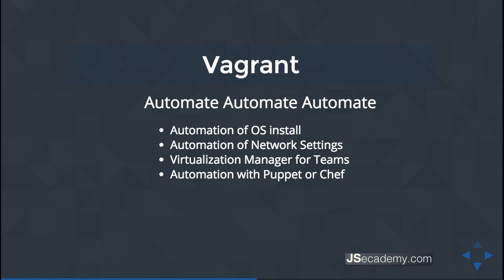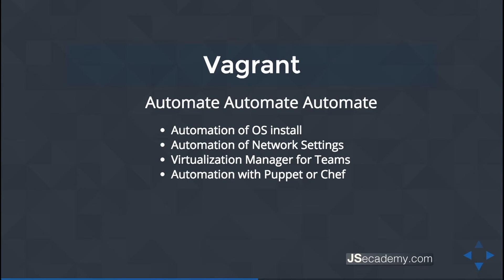Before we get started with the actual installation and configuration of Vagrant, I want to cover a couple of things. You need to understand what a Vagrantfile is. A Vagrantfile is a file written in Ruby — you don't need to know Ruby, but it helps. This file tells Vagrant what to do: it configures the operating system you want to install, the network settings, IP address, and different functionalities depending on how familiar you are with Ruby.